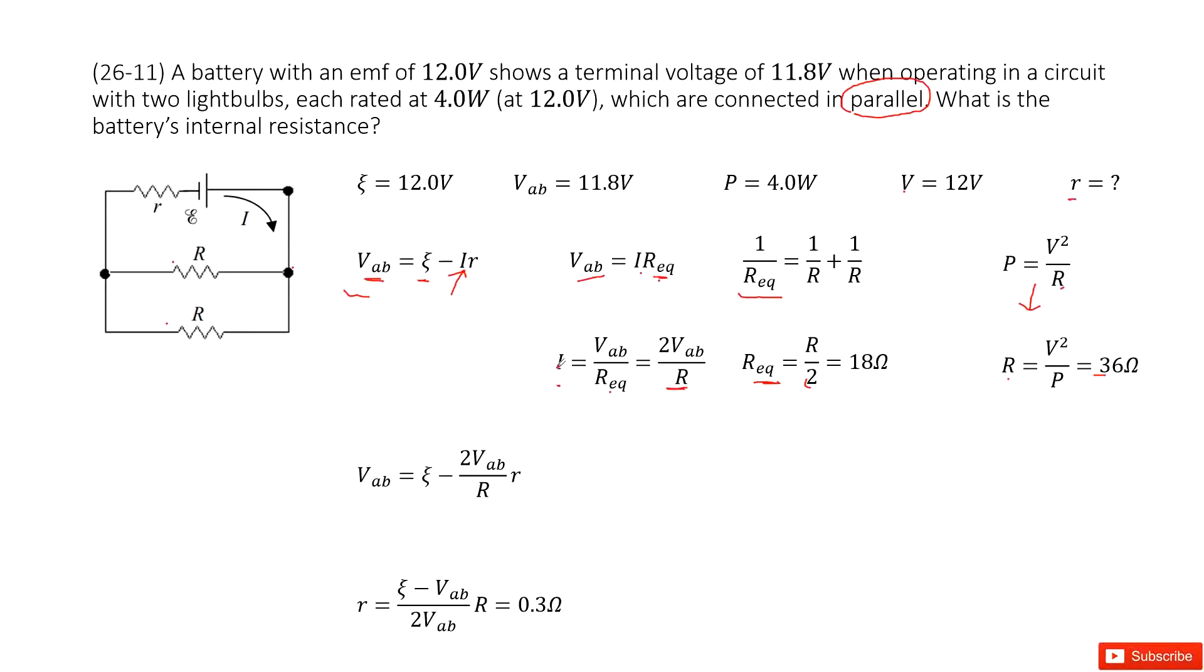Now we can input the current and R_eq into the initial function to get the formula for internal resistance r. We input all the given quantities: epsilon, V_ab as the terminal voltage, and R, and we get the final answer. Thank you.